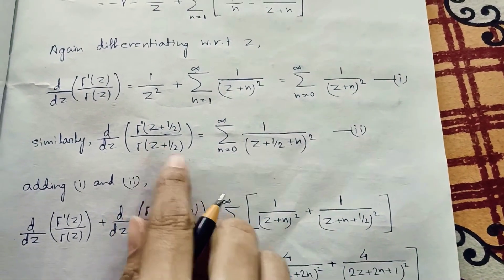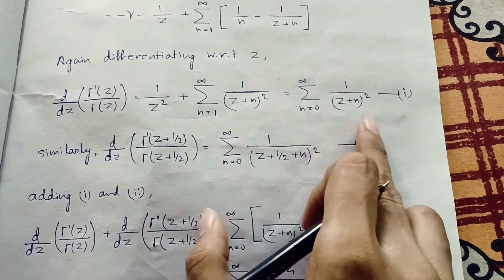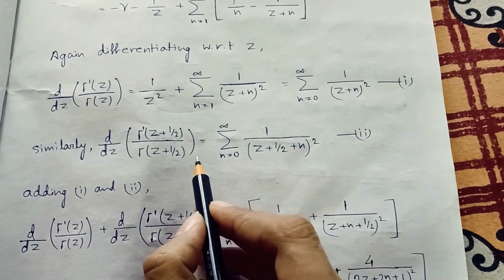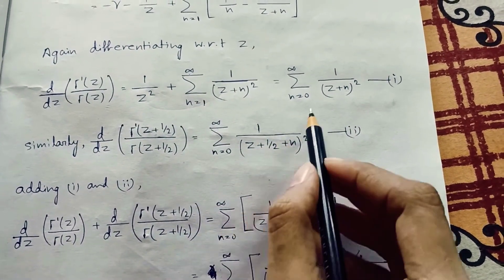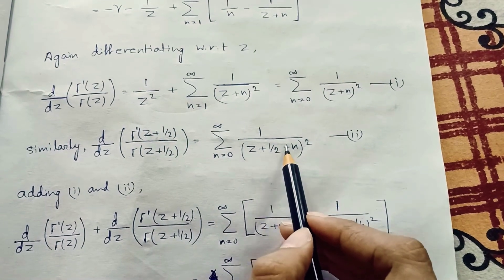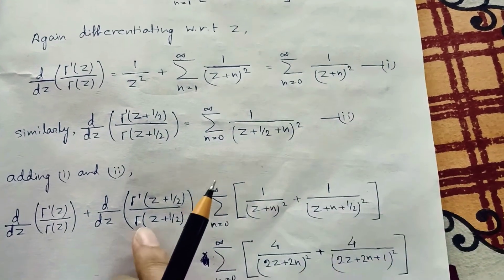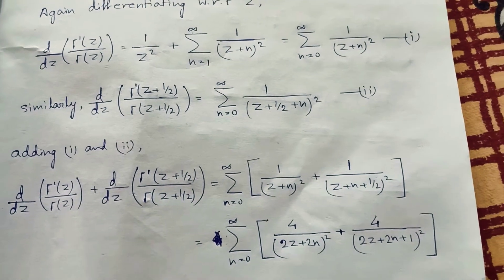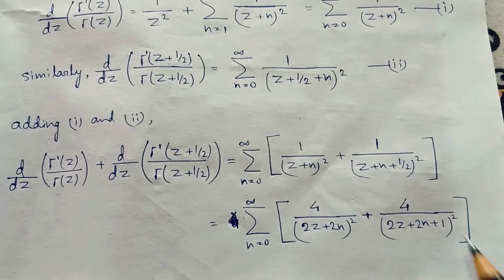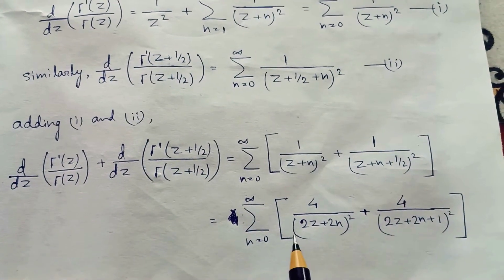Now we put z = z + 1/2 in Equation 1. The term 1/(z+1/2+n)² becomes 1/(z + (2n+1)/2)², and the full expression has summation terms 1/(z+n)² and 1/(z+1/2+n)².